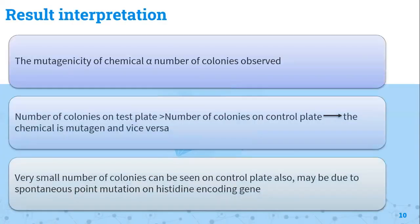For result interpretation: the mutagenicity of the chemical is directly proportional to the colonies observed — the more potent the mutagen, the more colonies will be found. If the number of colonies on the test plate is more than those on the control plate, the chemical is definitely a mutagen. A very small number of colonies on the control plate may be due to spontaneous point mutation in the histidine-encoding gene.